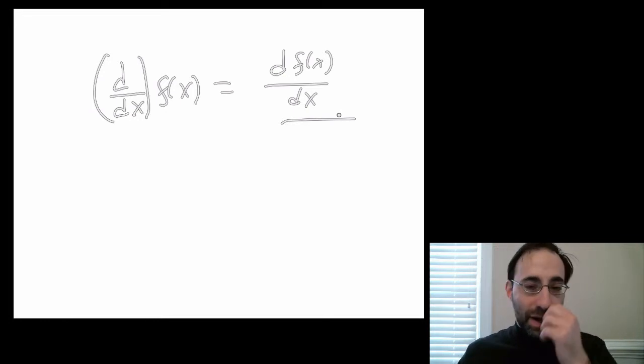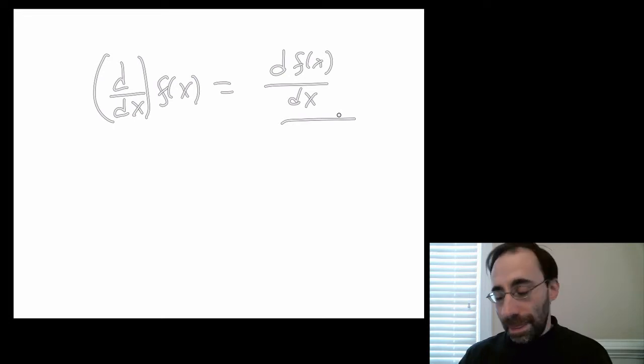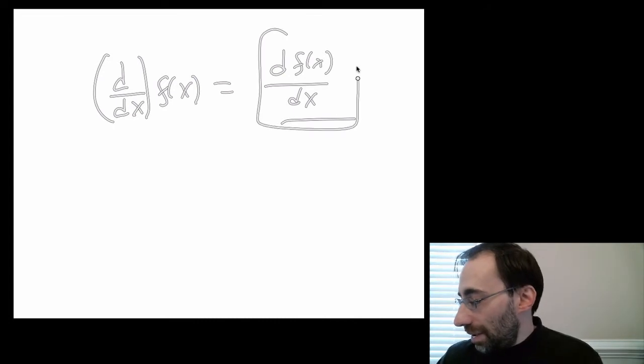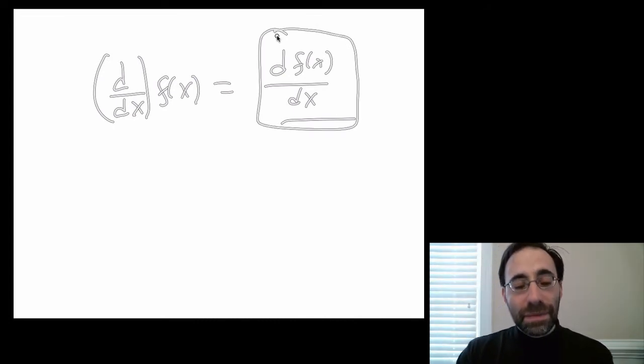If you treat it like a fraction, you'll make tons of mistakes. So treat this as a discrete thing. So df dx is the derivative of f with respect to x, not df over dx.